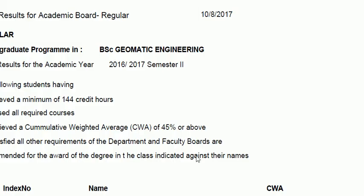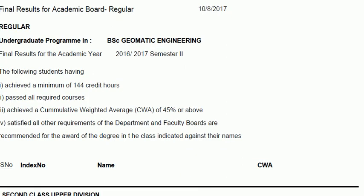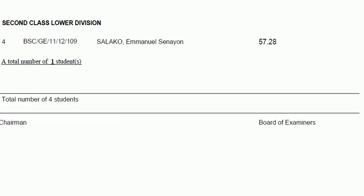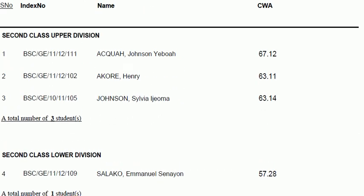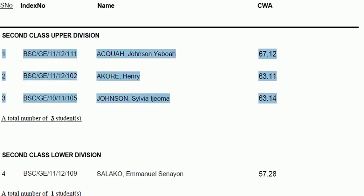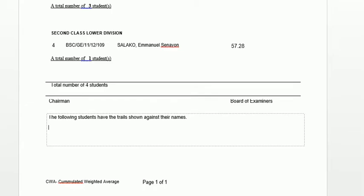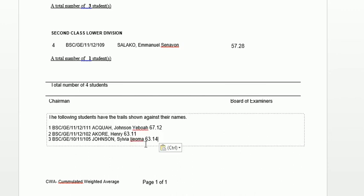Let's go to a PDF that I've already created. This PDF has some information that we want to add. We copy the text from the PDF, go back to our Word document, and paste it. It's as simple as that - we've modified the document and we can save it.